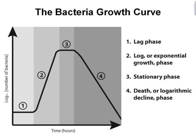During lag phase, bacteria monitor their environment and adapt themselves to growth conditions. This is the period where the individual bacteria are maturing but are not able to divide. In this phase, synthesis of RNA, enzymes, and other molecules occurs. Exponential phase, sometimes called the log phase, is a period characterized by cell doubling. The number of new bacteria appearing per unit time is proportional to the present population. If growth is not limited, doubling will continue at a constant rate so both the number of cells and the rate of population increase doubles with each consecutive time period. For this type of exponential growth, plotting the natural logarithm of cell number against time produces a straight line. The slope of this line is the specific growth rate of the organism, which is a measure of the number of divisions per cell per unit time.